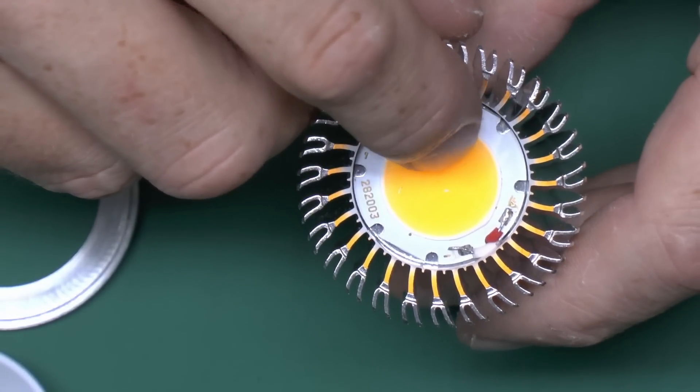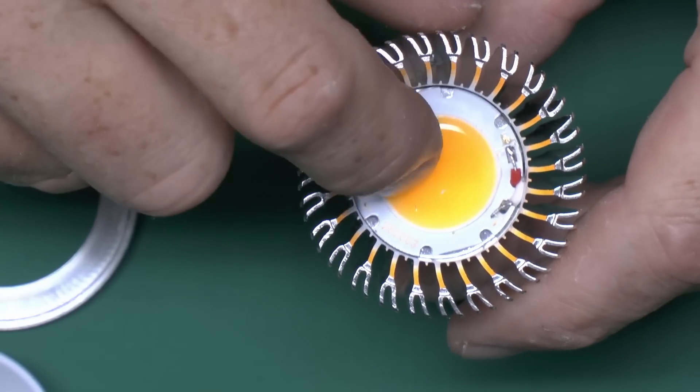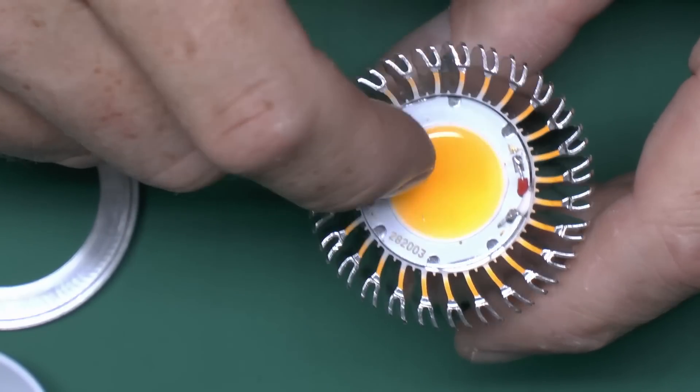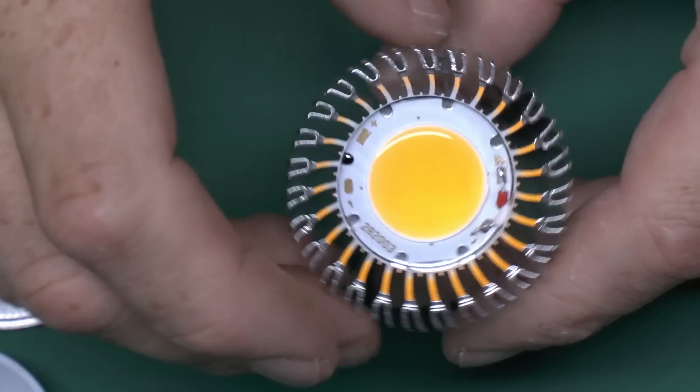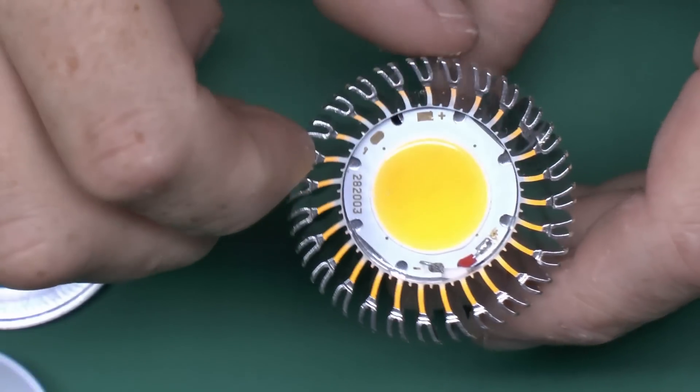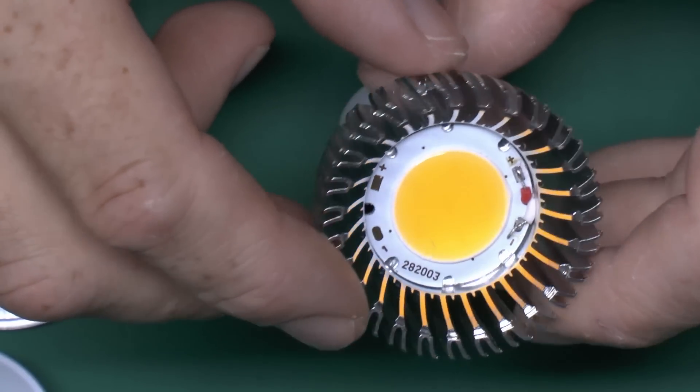This is one of these COB or chip on board type of things where the LED elements are fixed directly down onto the board and then there's just this partially or mostly transparent yellow glob put over the top to protect them. Not around the edges, just a few little wire connections there and a few other contacts, most of which don't seem to be connected to anything.